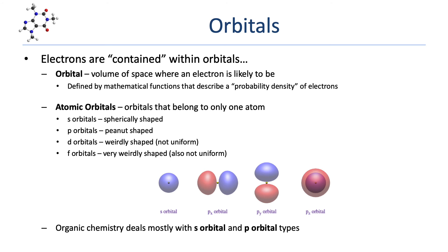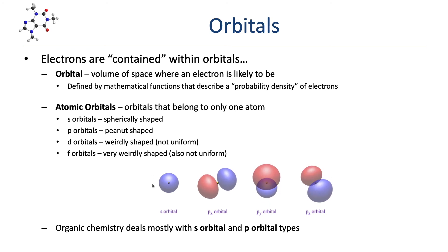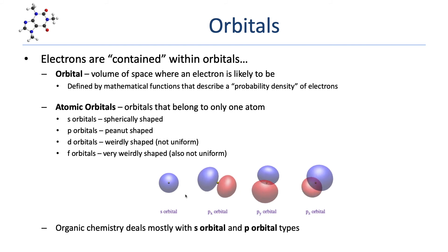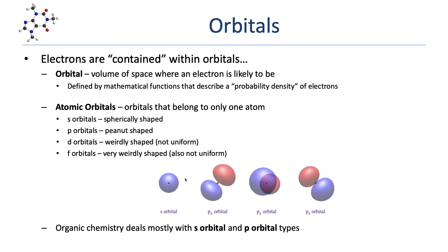Atomic orbitals belong to only one atom and come in a lot of different shapes. S-orbitals are spherically shaped. P-orbitals are peanut-shaped. D-orbitals are kind of weirdly shaped — in fact, different D-orbitals actually have different shapes. F-orbitals are also very weirdly shaped and aren't all the same. When studying organic chemistry, most of the time we're going to be dealing with only S- and P-orbitals. Here I've got some 3D models: a spherical S-orbital with the nucleus at the center, and peanut-shaped P-orbitals with two lobes of electron density on either side of the nucleus.